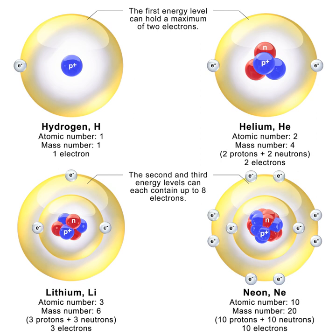Beta decay, in which neutrons decay to protons or vice versa, is governed by the weak force, and it requires the emission or absorption of electrons and neutrinos, or their antiparticles. Protons and neutrons behave almost identically under the influence of the nuclear force within the nucleus. The concept of isospin, in which the proton and neutron are viewed as two quantum states of the same particle, is used to model the interactions of nucleons by the nuclear or weak forces.